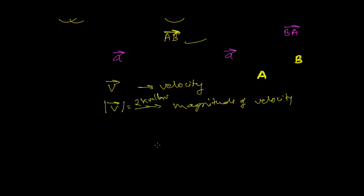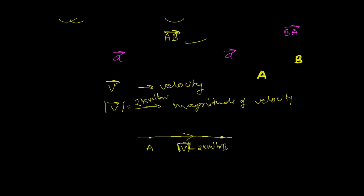So while representing velocity, let's say you move from place A to place B in a particular direction — you see here vector V, and this V is 2 kilometers per hour. That is the magnitude, and going from A to B is the direction. You give both direction and magnitude — that's why this is a vector quantity.